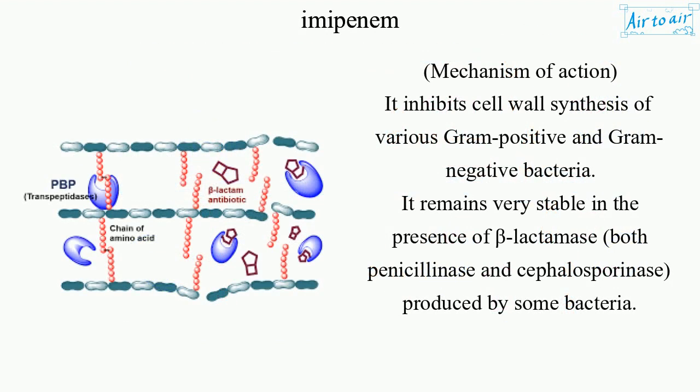Mechanism of action: It inhibits cell wall synthesis of various gram-positive and gram-negative bacteria. It remains very stable in the presence of beta-lactamase, both penicillinase and cephalosporinase, produced by some bacteria.